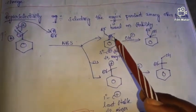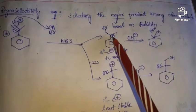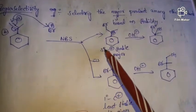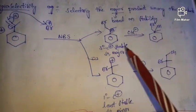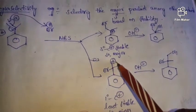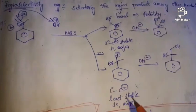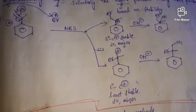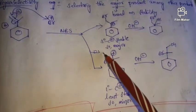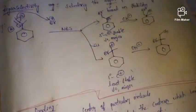If we observe the positive charge in case A, this carbocation is tertiary in nature because it is attached to three carbons. We know that tertiary carbocation is stable, so this product is said to be major. In case B, the carbocation has only one carbon attached, making it a primary carbocation. Since tertiary > secondary > primary in carbocation stability, case A is major and case B is minor. This is regioselectivity.